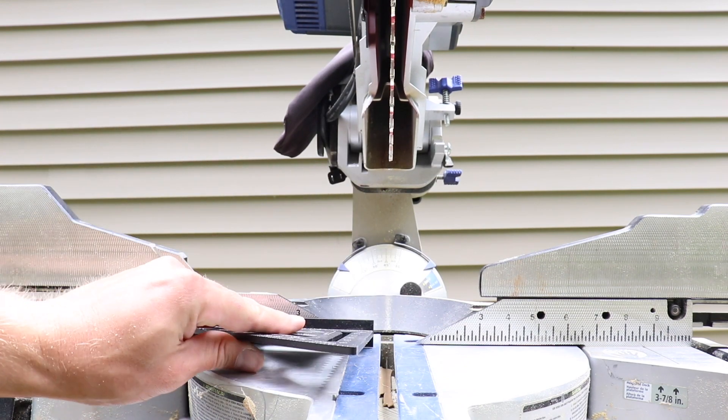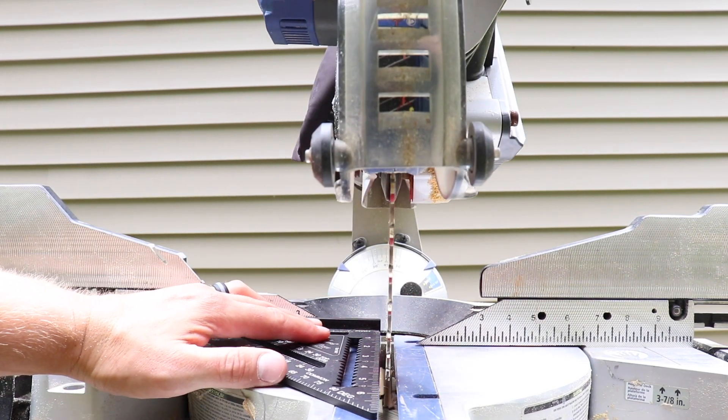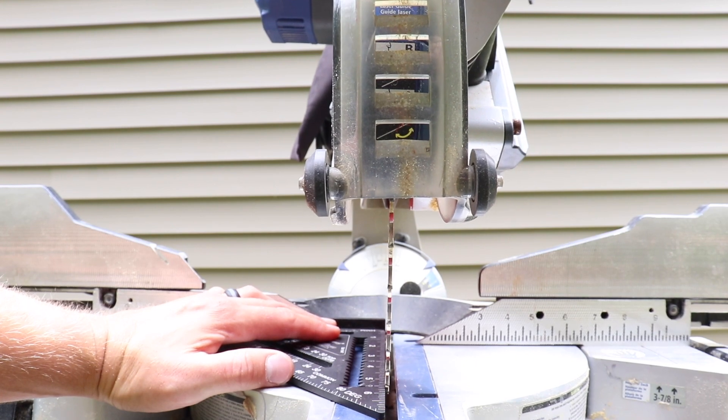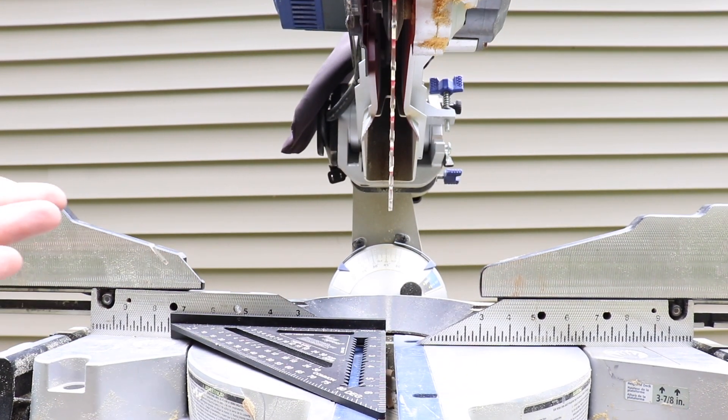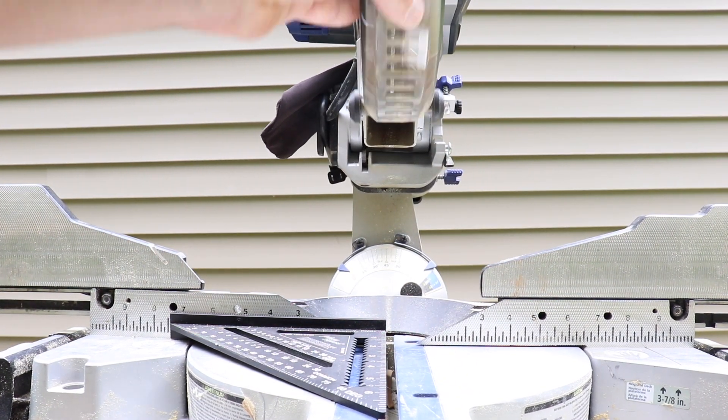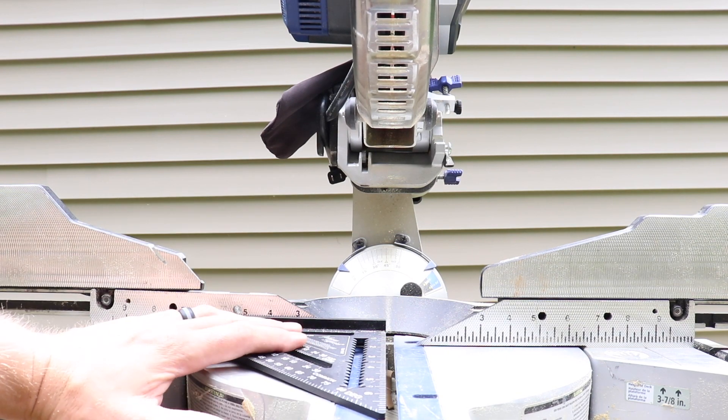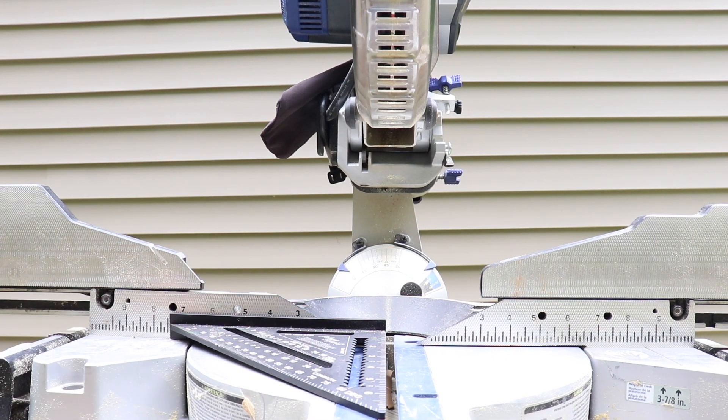You can also use it to check for square here and we're sitting pretty good here. So I'm not going to fool with that, but that's something else that you can do with your speed square. You can use that on miter saws, table saws or circular saws.